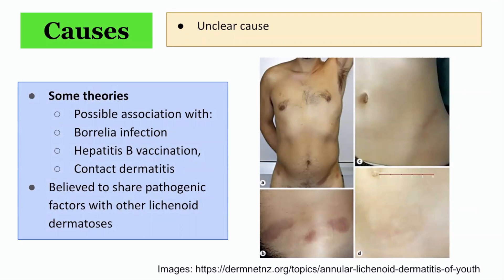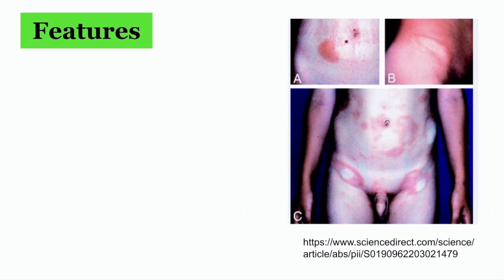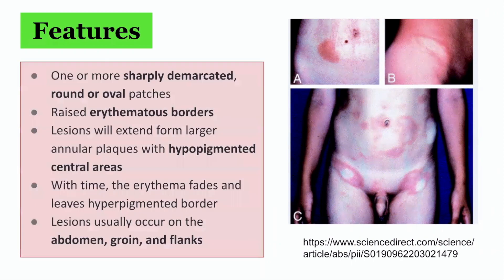It is believed to share similar pathogenic factors with other lichenoid dermatoses. The features of Annular Lichenoid Dermatitis of Youth include one or more sharply demarcated round or oval patches with raised erythematous borders. The lesions extend to form larger annular plaques with hypopigmented central areas. With time, the erythema fades and leaves behind a hypopigmented border.